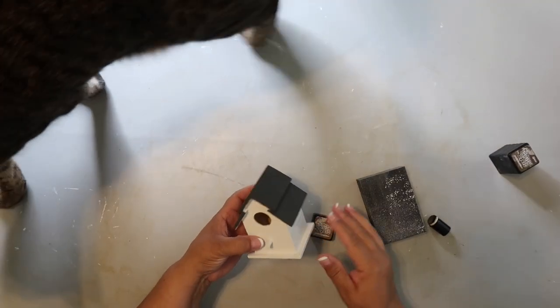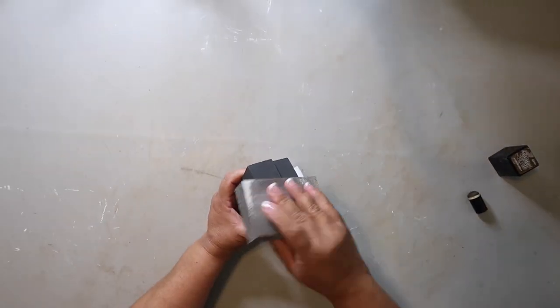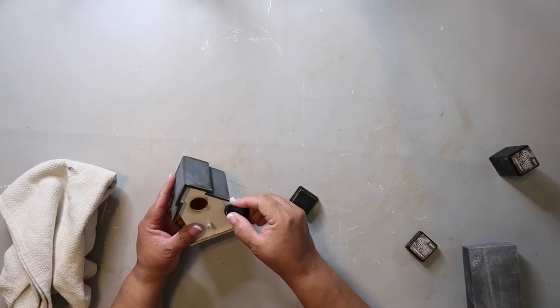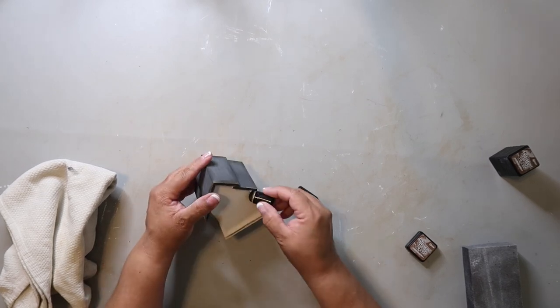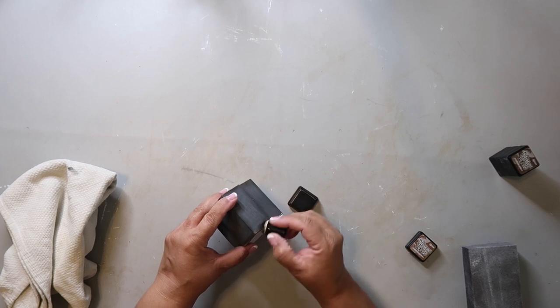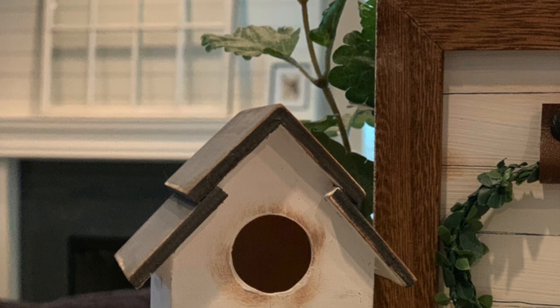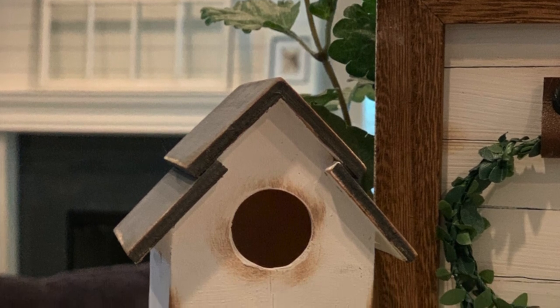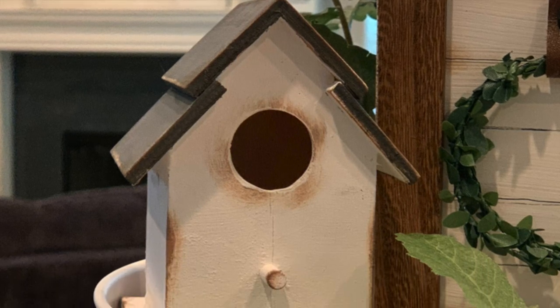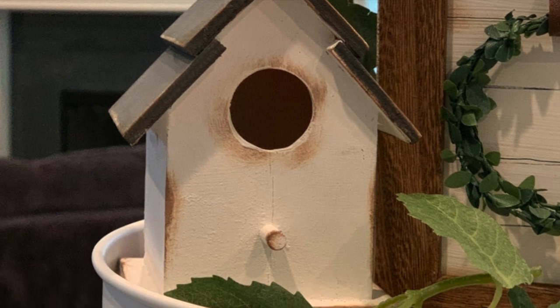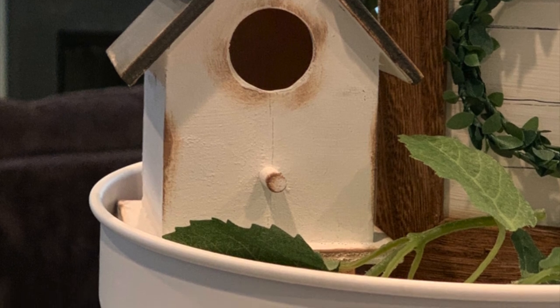To finish out this birdhouse, I'm just going to use a sand block that I got from the Dollar Tree to distress it a little bit on the edges. And then I'm also going to take some distress ink and use my little dabber tool and add it to the corners and the edges. This is how the birdhouse DIY turned out, and I think it turned out cute. The total for this project was around two dollars. It was one dollar for the birdhouse at Dollar Tree, and I already had the paint and the distressing ink on hand, so I'll say one dollar for those supplies, making it two dollars total.